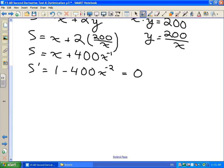Let's see, how can we solve this thing for x? Well, let's bring this term with the 400 and the x to the negative 2 over to the other side. So we'll get 1 equals 400 over x squared. I can solve this just by cross-multiplying and get x squared equals 400.